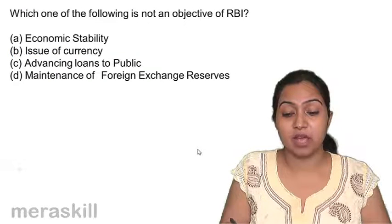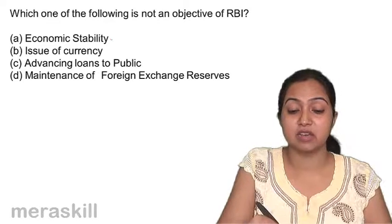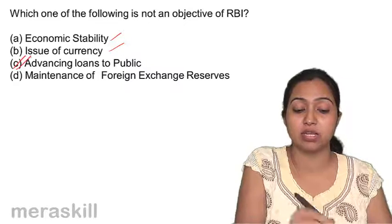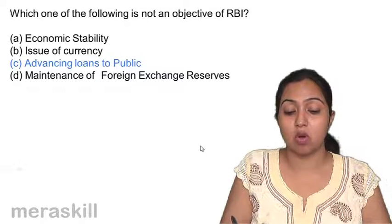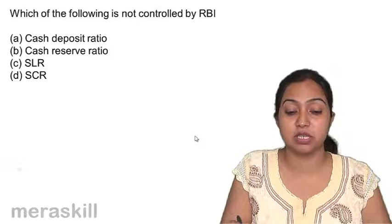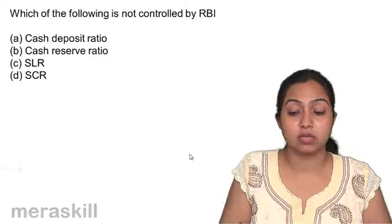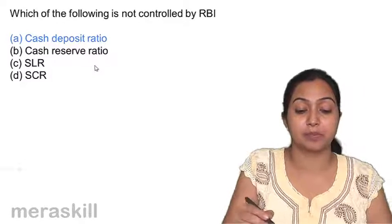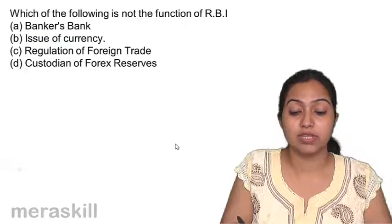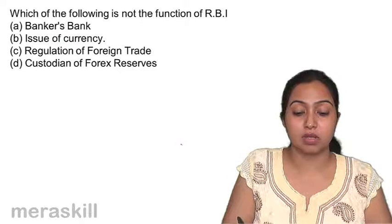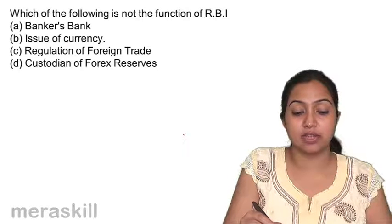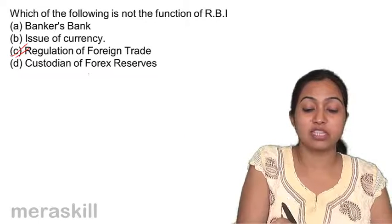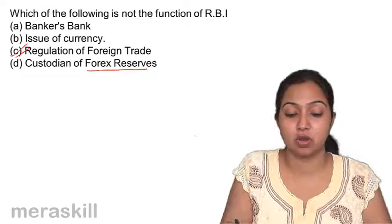Advancing loans to the public is not an objective of RBI. Economic stability, currency management, and foreign exchange reserves are objectives. Cash deposit ratio is not controlled by RBI. Regulation of foreign trade is not RBI's function — it maintains foreign exchange reserves but does not deal in foreign trade.